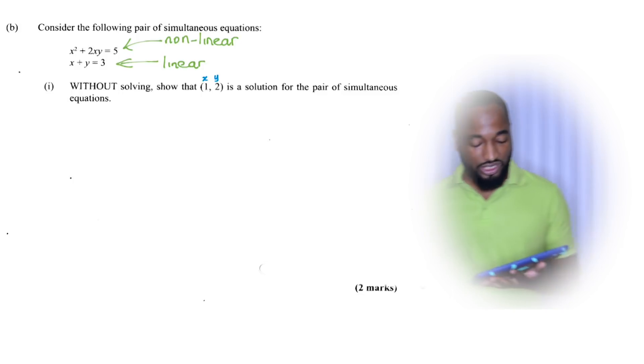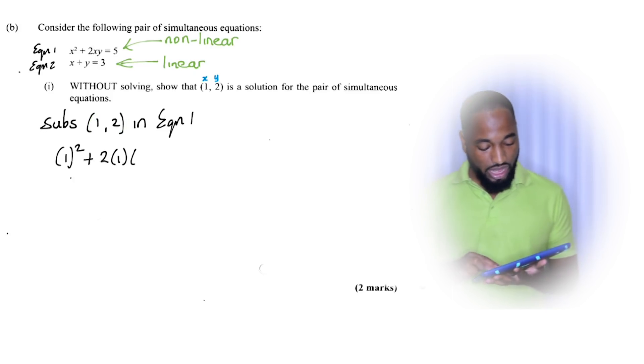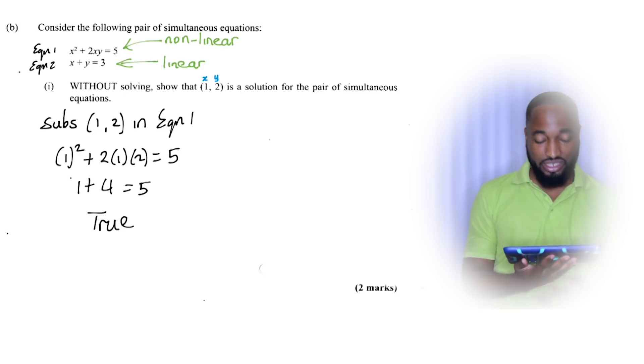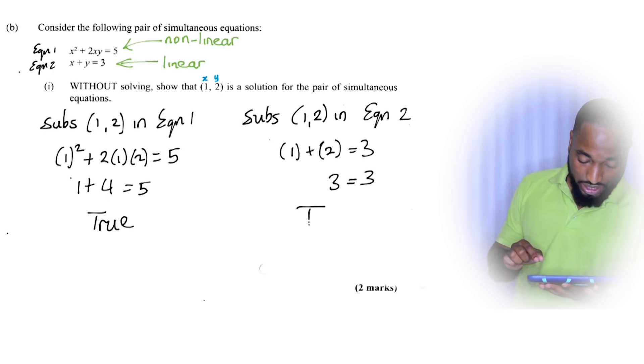Substitute the point (1,2) into the first equation. Anywhere I see x I'll put 1, anywhere I see y I'll put 2. Let's work that out and see if the left hand side equals the right hand side. It turns out that it is, so 5 equals 5 - that's true. Let's check it for the next equation. Substitute the same point here, (1,2). True! It works for both equations. I substituted the point into both equations and got that they work, the left hand side equals the right hand side.